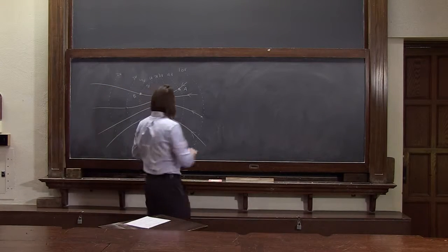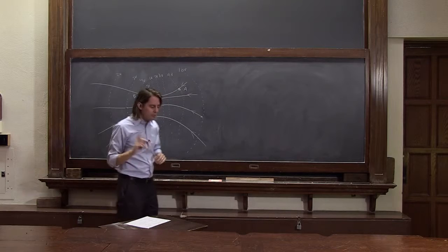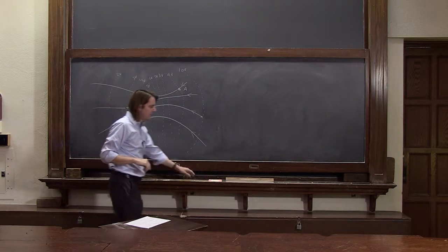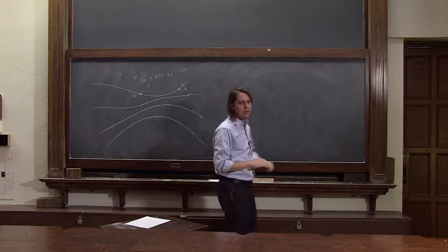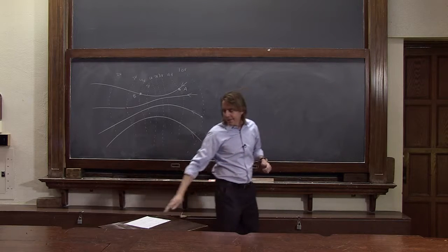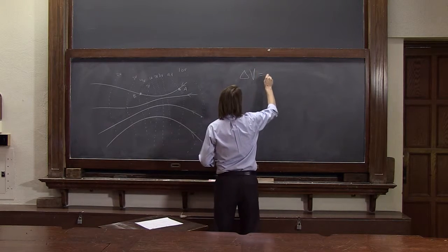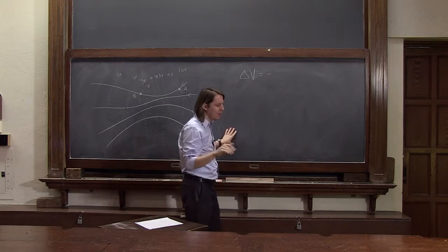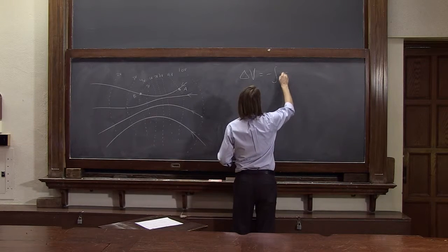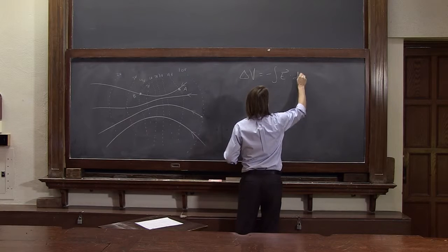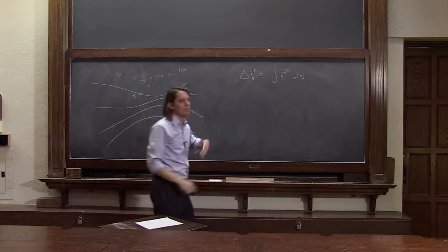This potential diagram of a complicated field illustrates another aspect of the interplay between field and potential. First, let's remind ourselves that delta V equals integral of E dot dS. We know that's true.